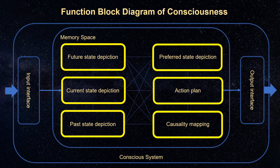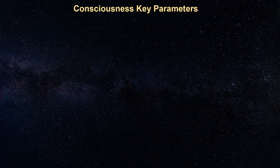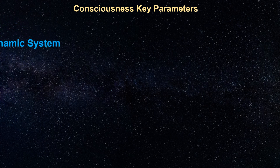In the end, natural selection will eliminate those conscious systems whose components don't support their own survival. Some environments may be more tolerant to deviations, while some others may be less forgiving, and they can change from time to time. Highly conscious systems are more resilient to those changes, while less conscious systems are more dependent on environmental conditions. Needless to say, a conscious system must be dynamic; otherwise, it can't update its internal state nor make changes to improve its chance to survive.